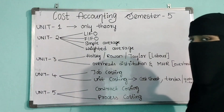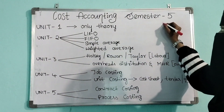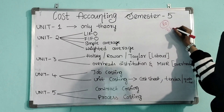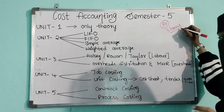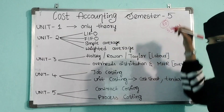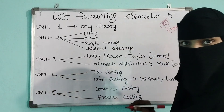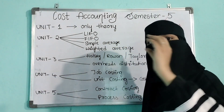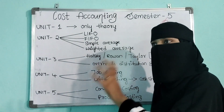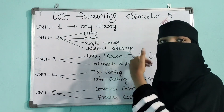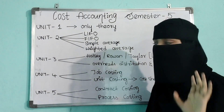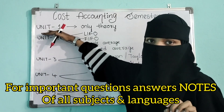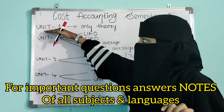Let's get started. The Cost Accounting subject will be 80 marks and the time duration will be 3 hours. In 3 hours you need to attempt the 80-mark question paper. We are going to discuss unit by unit — unit 1, 2, 3, 4, 5 — what are the important methods and what are the ones you can leave.